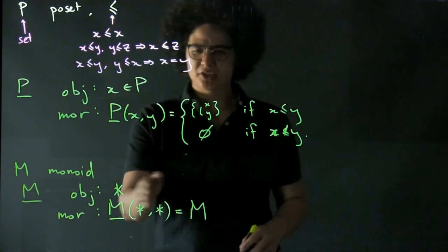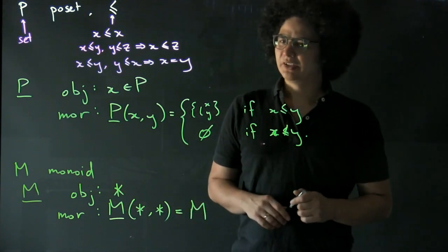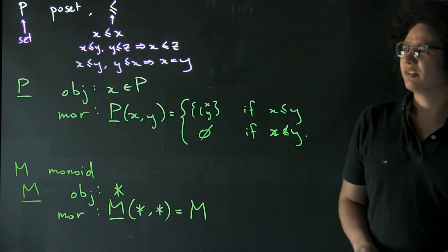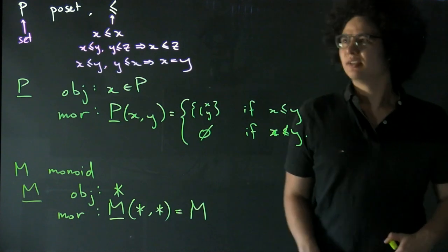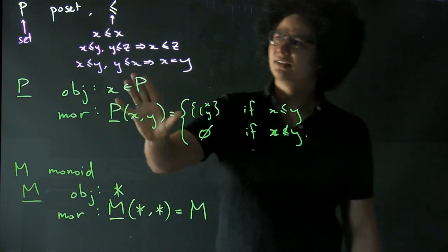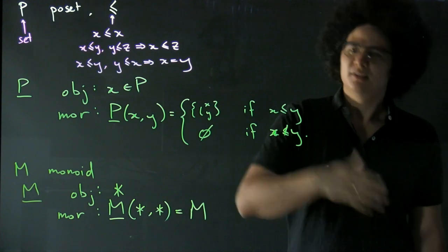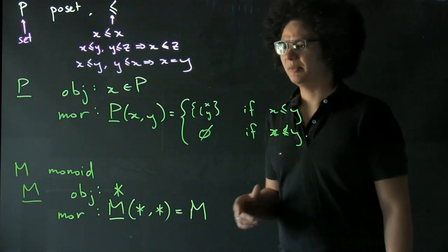And composition is going to be multiplication in M. The composition law is inherited from the multiplication on M. So these two examples of categories are things you can think of as prototypical. In that the poset category is the type of category where you have many objects, but at most one arrow between, one morphism between them.